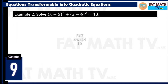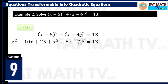Example number 2: solve x minus 5 squared plus x minus 4 squared equals 13. First, expand: x minus 5 squared is x squared minus 10x plus 25. Plus x minus 4 squared is x squared minus 8x plus 16 equals 13. Simplify the left side: x squared plus x squared is 2x squared. Negative 10x minus 8x is negative 18x. And 25 plus 16 is 41. We want this in standard form, so copy 2x squared minus 18x, and 41 minus 13 is positive 28.